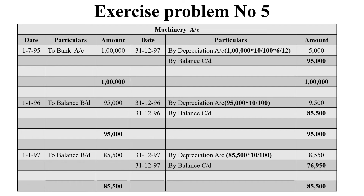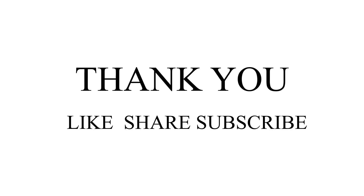The balancing figure for 1996 is 85,500. That is brought down as the opening balance for the third year, 1997. We calculate 10% on 85,500, which is 8,550 rupees. The balancing figure is 76,950. The grand total on both sides is 85,500, and the value of the asset as on 31-12-97 is 76,950 rupees.